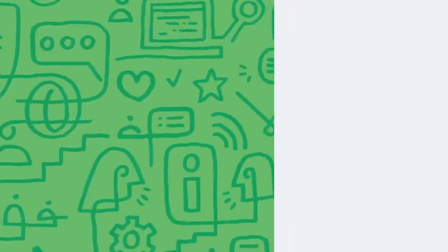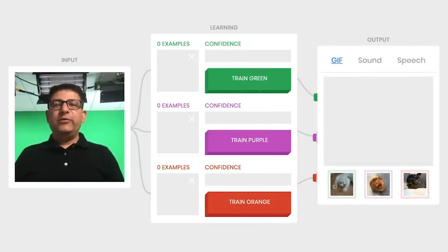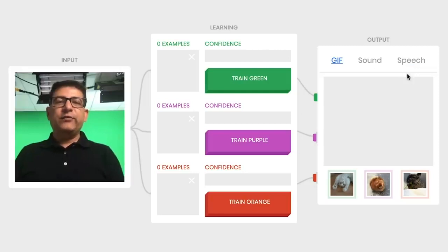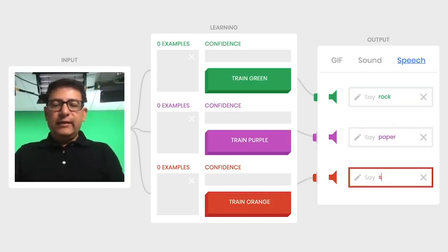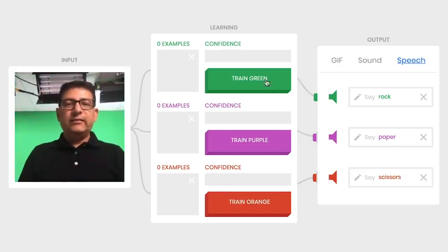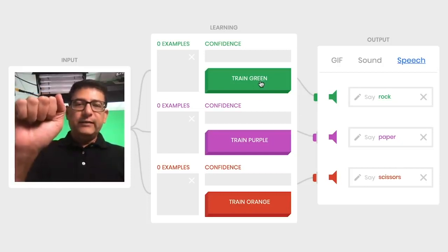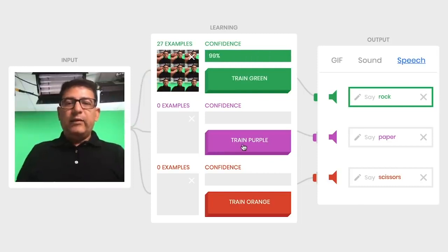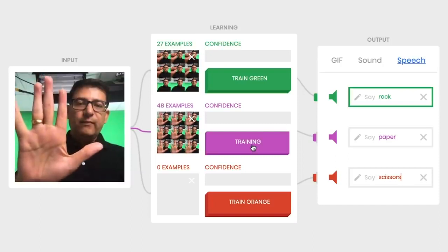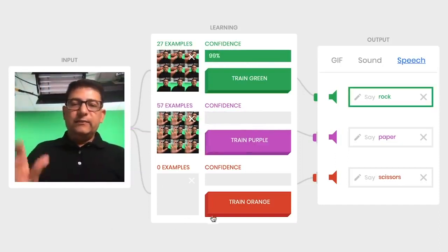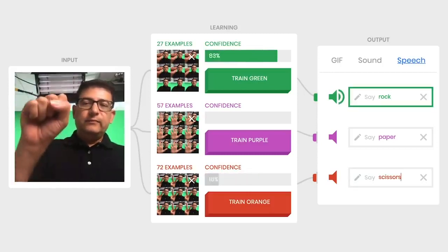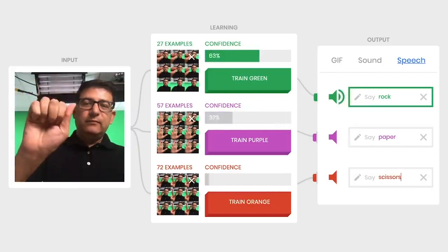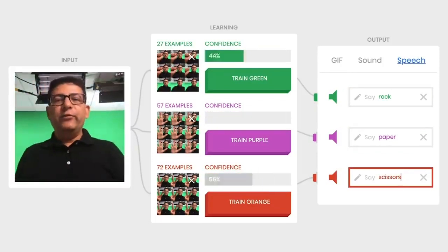In this demo, I'll show you how to use Teachable Machine to train a custom model. The MobileNet image classification model is already running in this browser session, and we will modify it to recognize symbols for rock, paper, and scissors. We set up three output classes and record training images for each — first rock, then paper, then scissors. And now our model is ready for inference. Rock, paper, scissors — it correctly identifies each gesture in real time. In just a few minutes, you have a custom model trained directly in the browser.